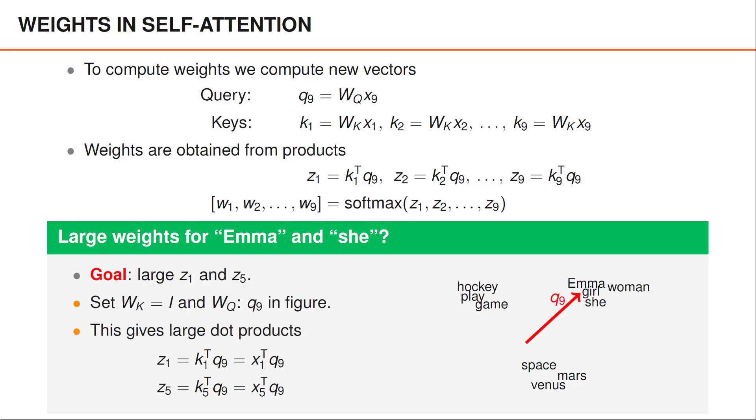Note that this visualization is only two-dimensional but that the word embeddings that we are comparing are actually long vectors. One way to obtain large weights for both Emma and She would therefore be to select WK to be the identity matrix such that the key vectors are identical to the original vectors.